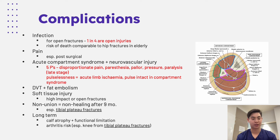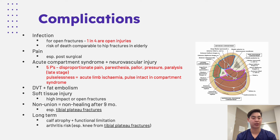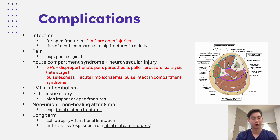Other complications include DVTs, because the patient might not be mobilizing as quickly, and fat tissue embolism from the fracture — releasing bone marrow into the blood. There are also soft tissue injuries and non-union, which is classified as non-healing of the bones after nine months. In the long-term, we can see calf atrophy and functional limitations, particularly in younger patients with higher impact injuries where there's a greater impact on quality of life. With joint involvement, there's also a risk of arthritis, particularly with tibial plateau fractures.